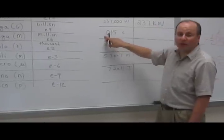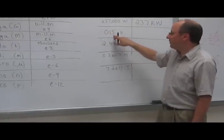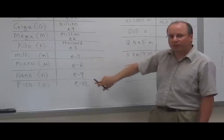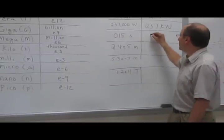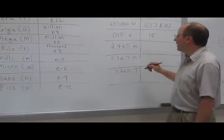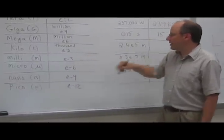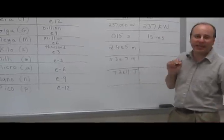This next one, we have a small number, 0.015. So for the smaller numbers, we're going to use one of these guys here. We're going to move it over 3 spots and get 15. And for 3 spots, that's going to be millis. So it would be 15 milliseconds.